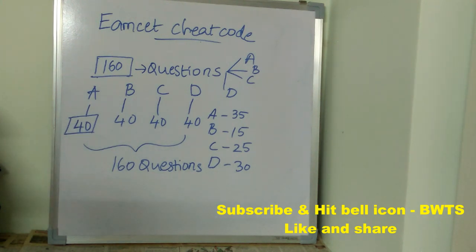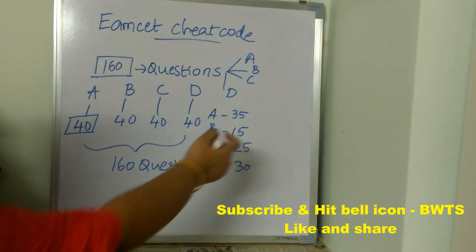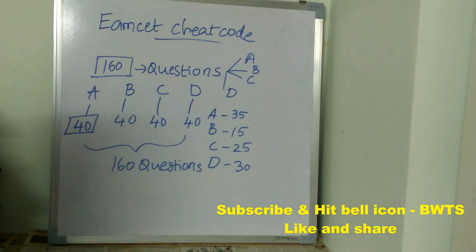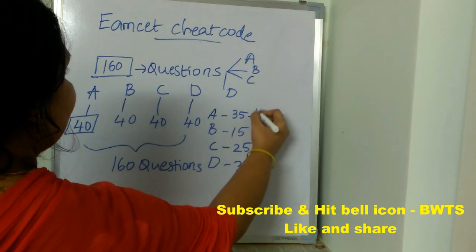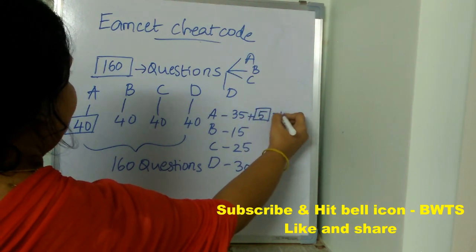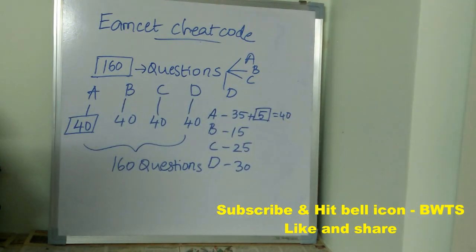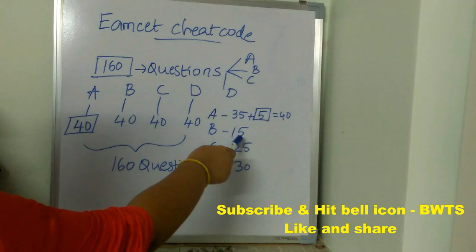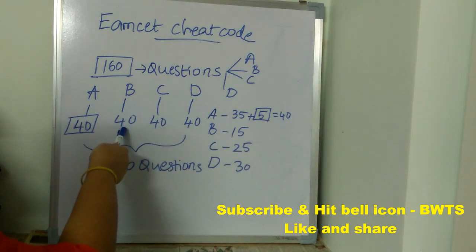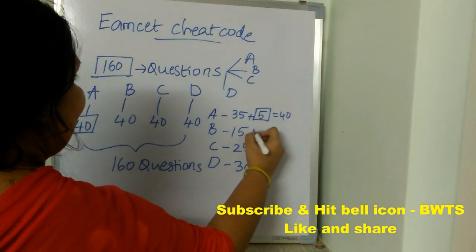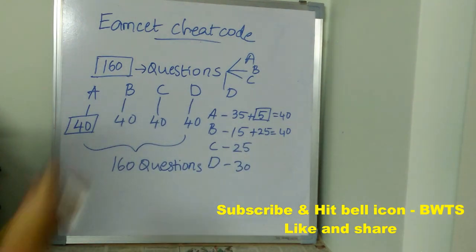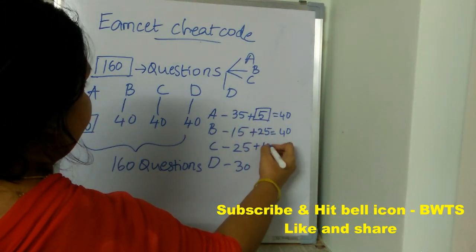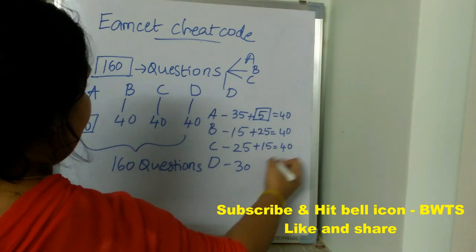In the overall question paper, Option A will be the answer for 40 different questions, but you selected Option A only for 35 questions. So for the remaining 5 questions, you can also select Option A as the answer, making it 40 total. For Option B, you kept it 15 times, but overall it appears 40 times, so 20 more times you can put Option B. Similarly, 15 more times you can put Option C.